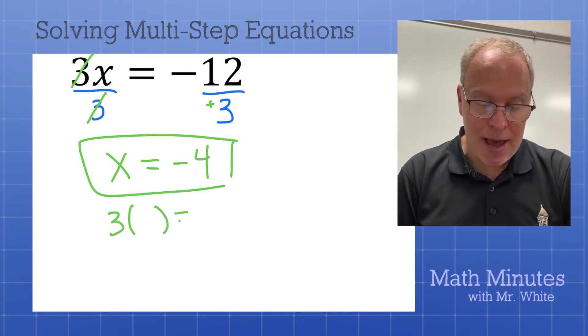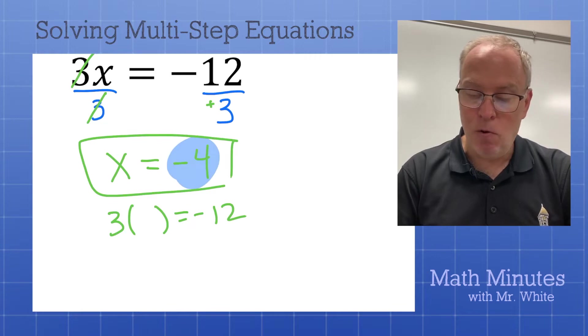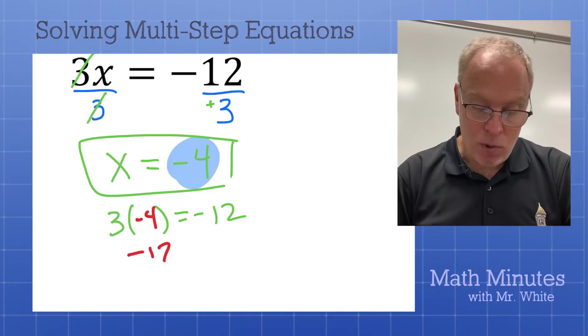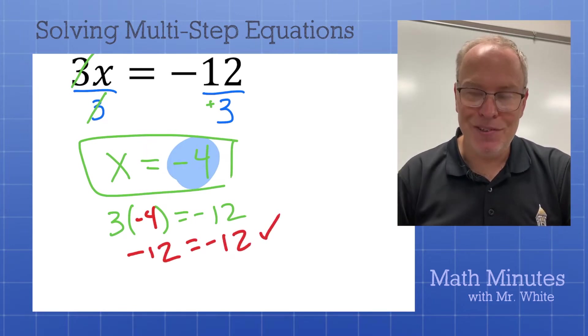We could plug that in and check. Let's do that. 3 times x is negative 12. And we're testing this negative 4. So let's go ahead and put that in. 3 times negative 4 is negative 12. You see it works. It gave us a true statement. All right. Let's continue on.